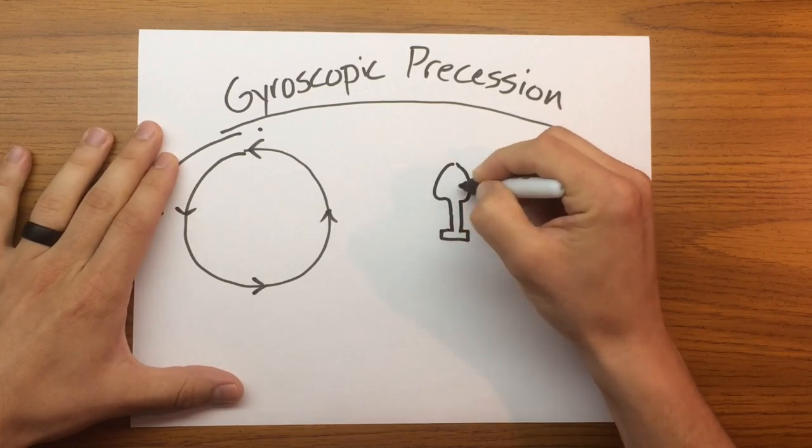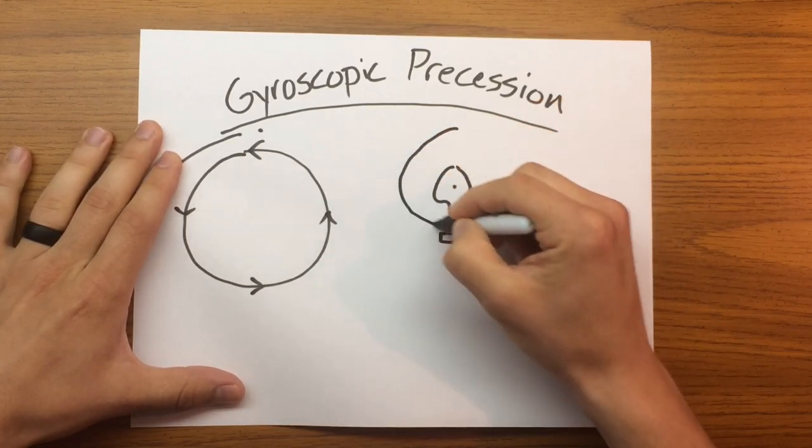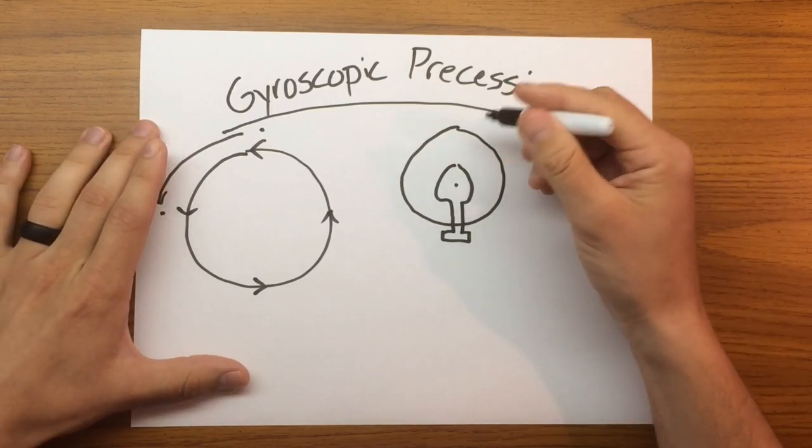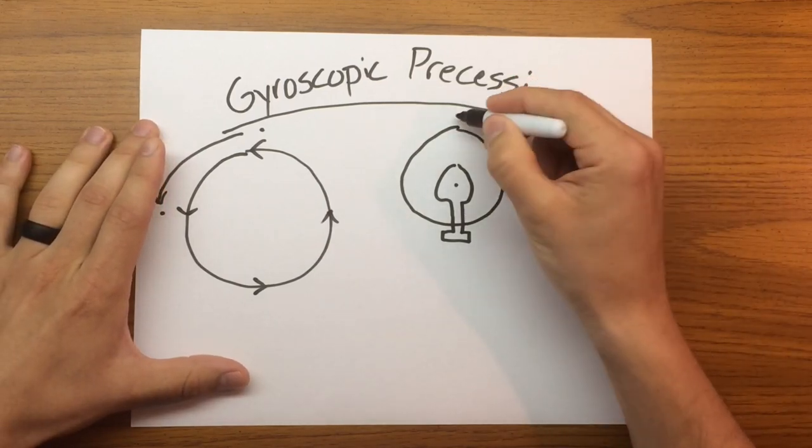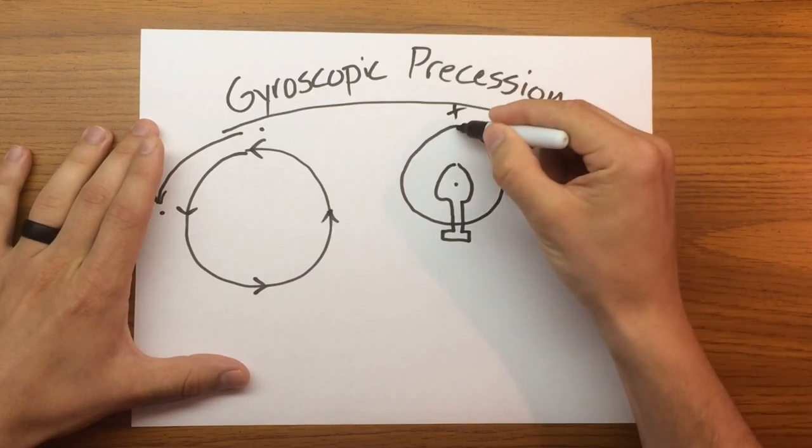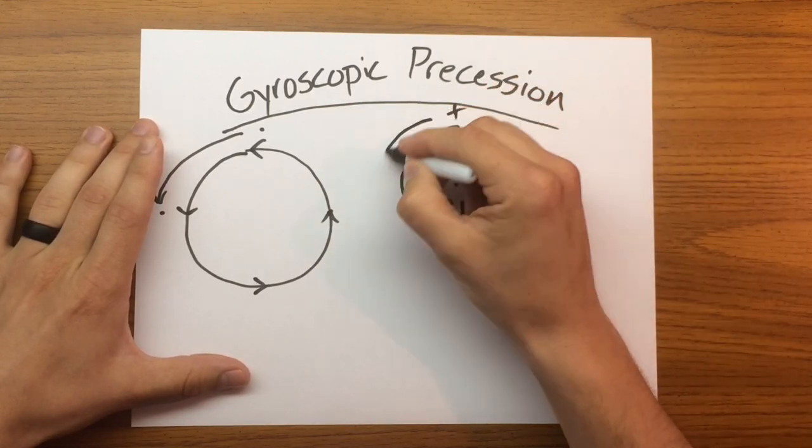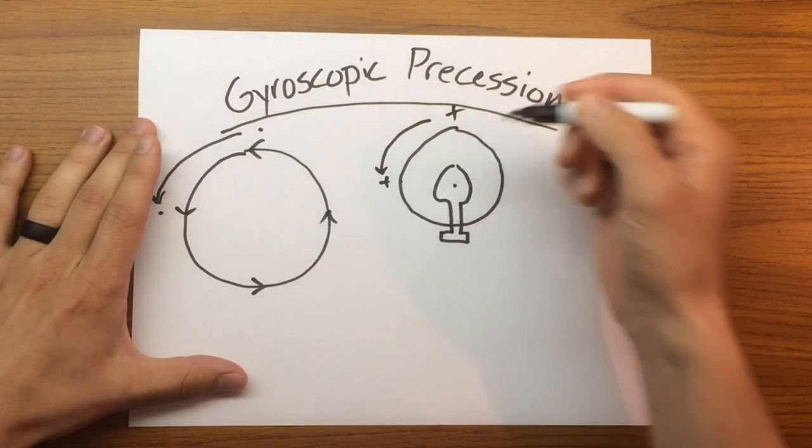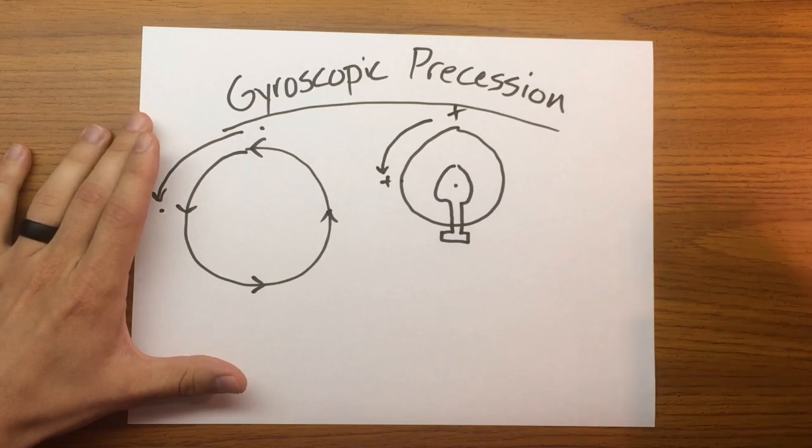Well, here's our fuselage and our rotor disc. What this means is that if we have any kind of application, say an increase in pitch on the nose of the aircraft, it's actually going to manifest 90 degrees later as an increase in pitch on the left side, and that would be inducing a right roll.